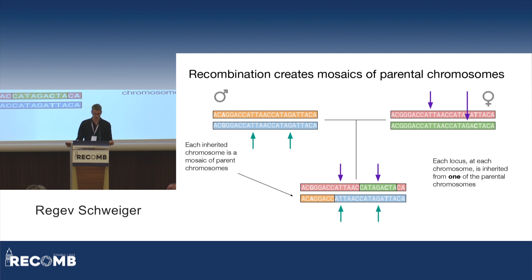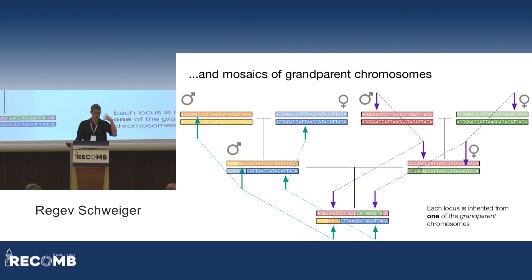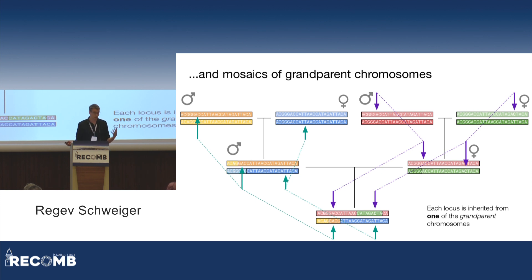We look at the same position on the other, paternal chromosome — it comes from the blue one. And because it's a mosaic, if we move to another position in the genome, the identity of the chromosome can change, and now it comes from the green one from the mother. We can step back and look at the grandparents — the parents' chromosomes are mosaics of the grandparents' chromosomes, and so forth. If we look at a specific position, we can track it to the parent and then to the grandparent from which it came — in this case, the mom's dad.